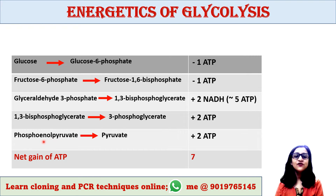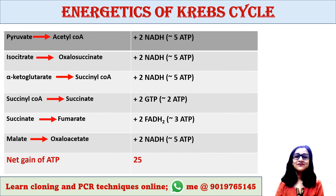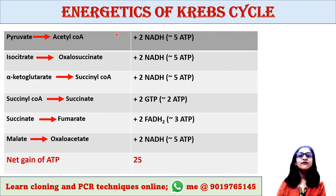Two more ATPs are produced when 1,3-bisphosphoglycerate is converted into 3-phosphoglycerate. Again, two ATPs are generated when phosphoenolpyruvate is converted into pyruvate. Hence, the net gain of energy in glycolysis is 7.